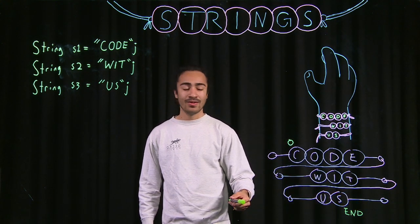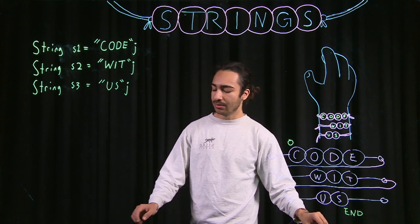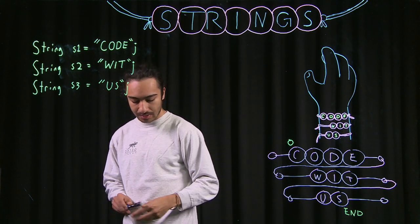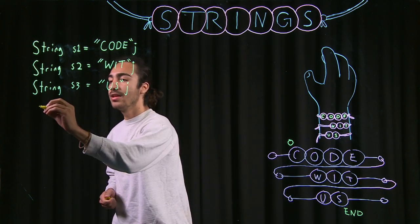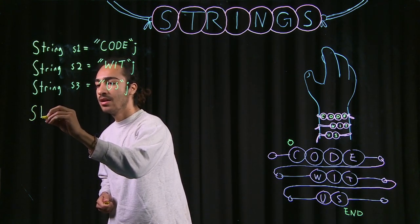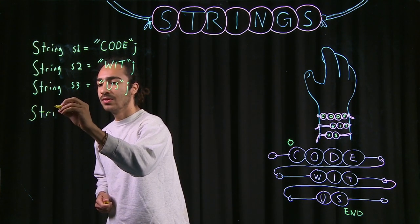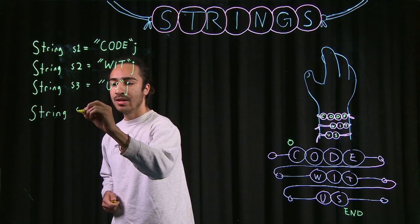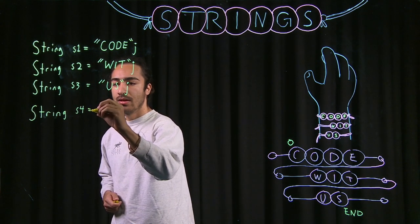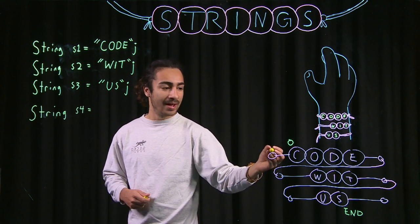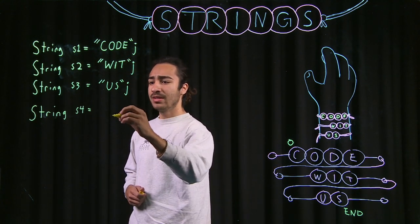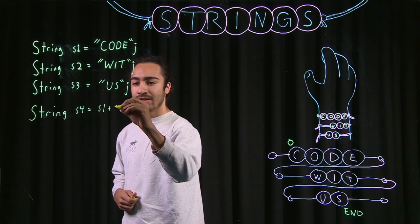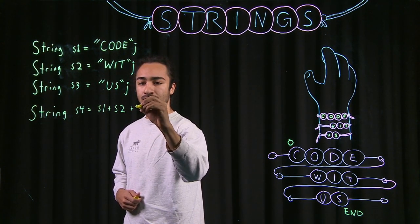So now, in code or in Java, the way that you'll do this is let's make another declaration. We get string and we'll call this S-4. And instead of just using code with us, let's use our previous strings and let's do S-1 plus S-2 plus S-3.